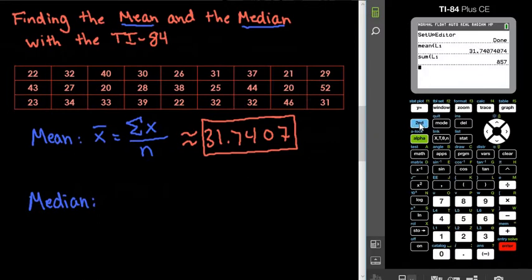For the median, we would just go back to the same place, 2nd STAT, or where it says LIST, and go over to MATH. And this time, we're going to choose option 4, the median. And we would do 2nd 1 again. And it tells us that the median is 31.